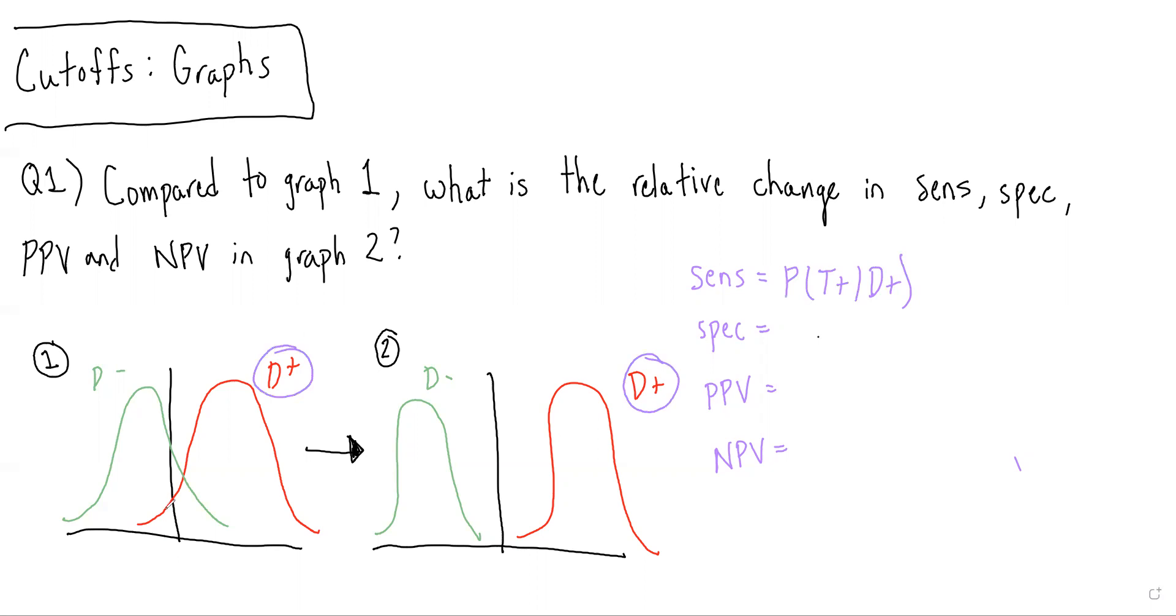And we can see that in graph one, there's this area to the left of the cut-off of patients with the disease who actually had a negative test result.